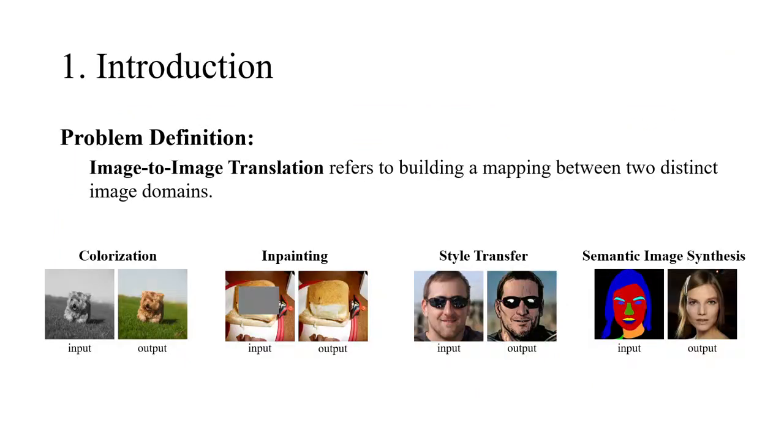Image-to-image translation refers to building a mapping between two distinct image domains. Numerous problems in computer vision and graphics can be formulated as image-to-image translation problems, like colorization, inpainting, style transfer, semantic image synthesis, etc.